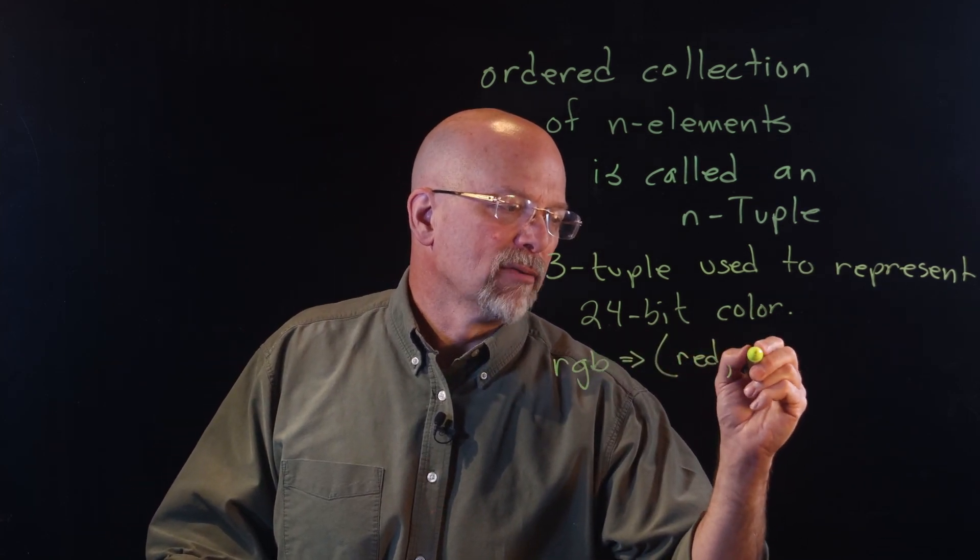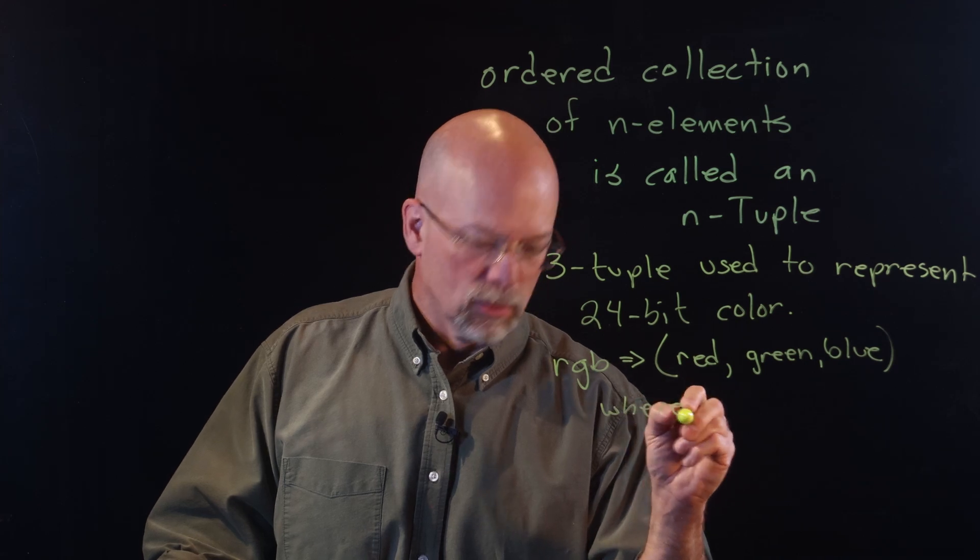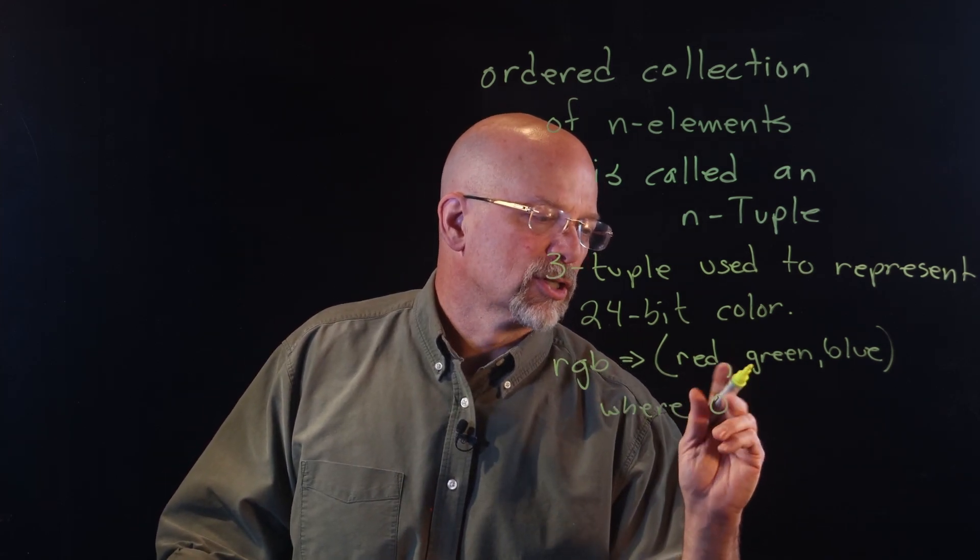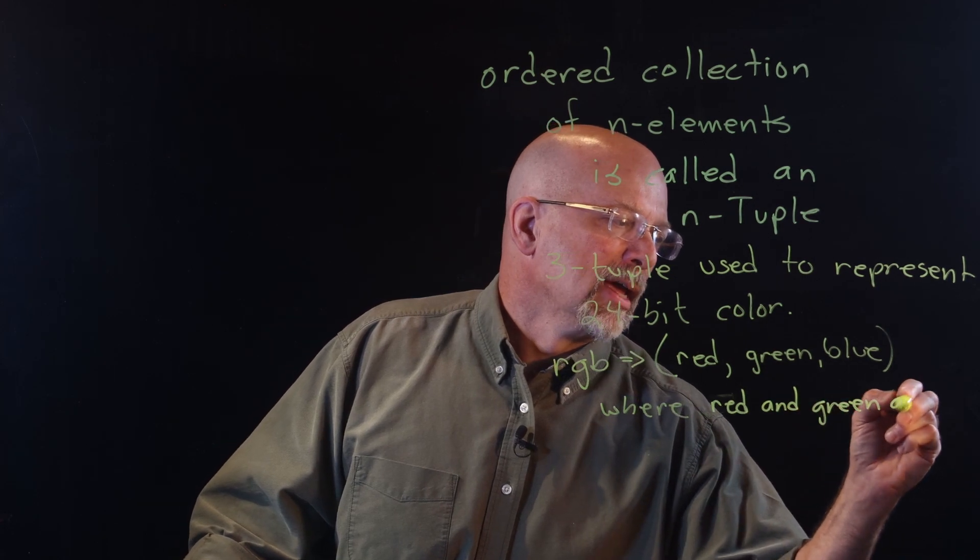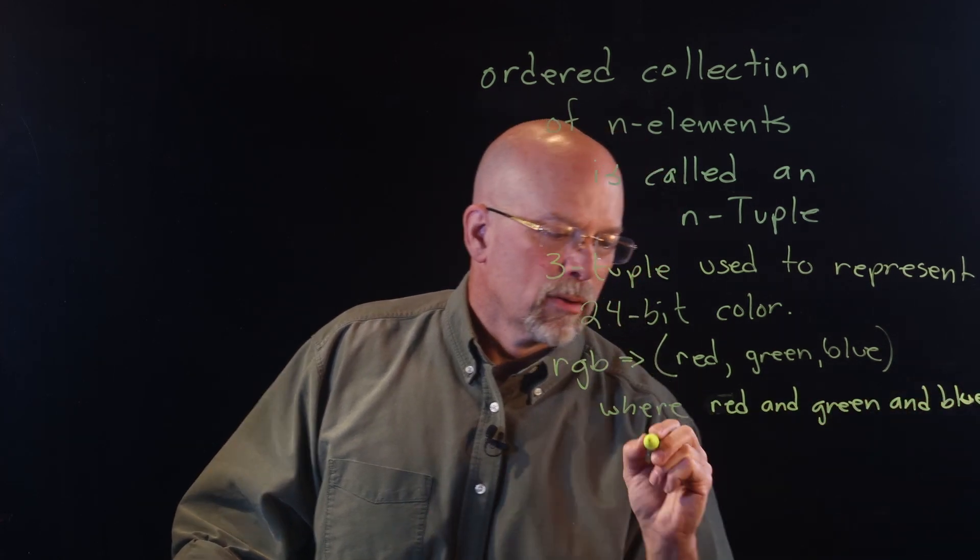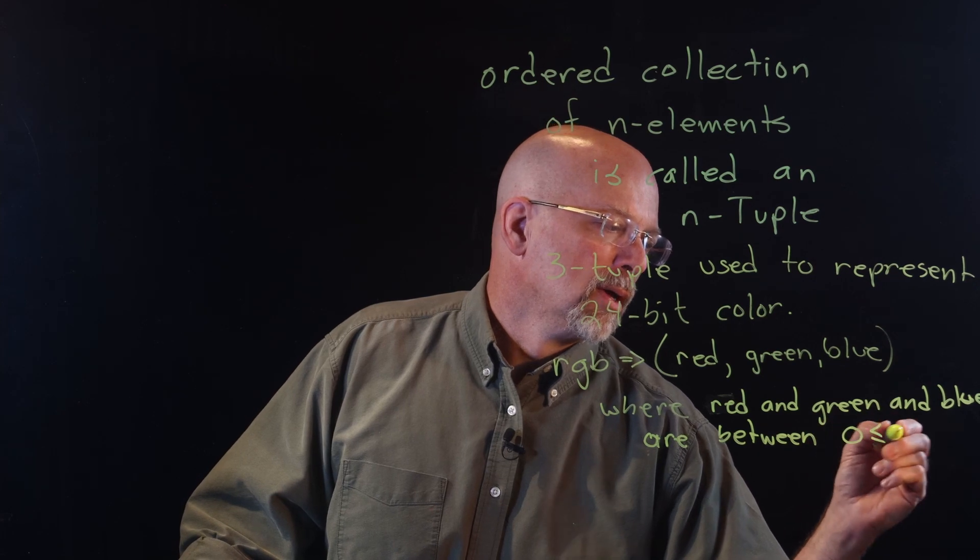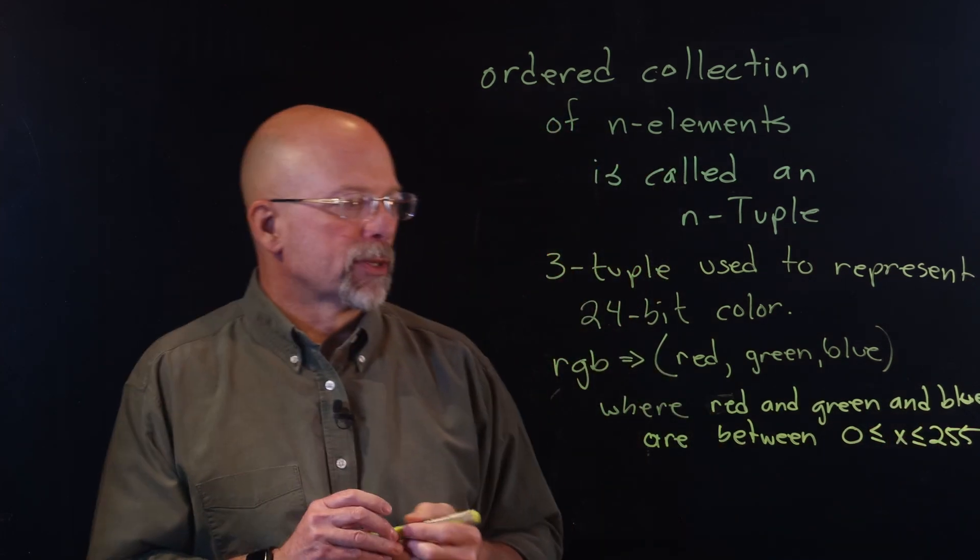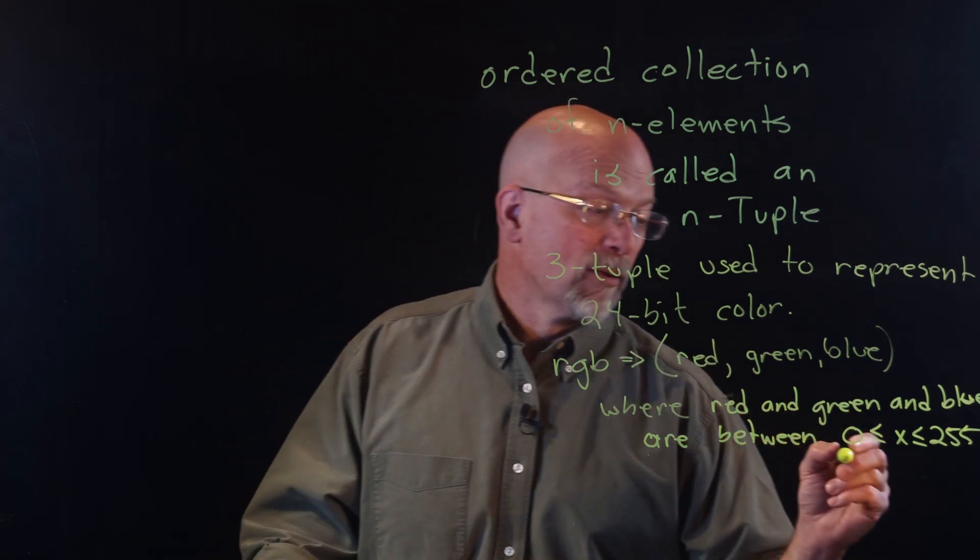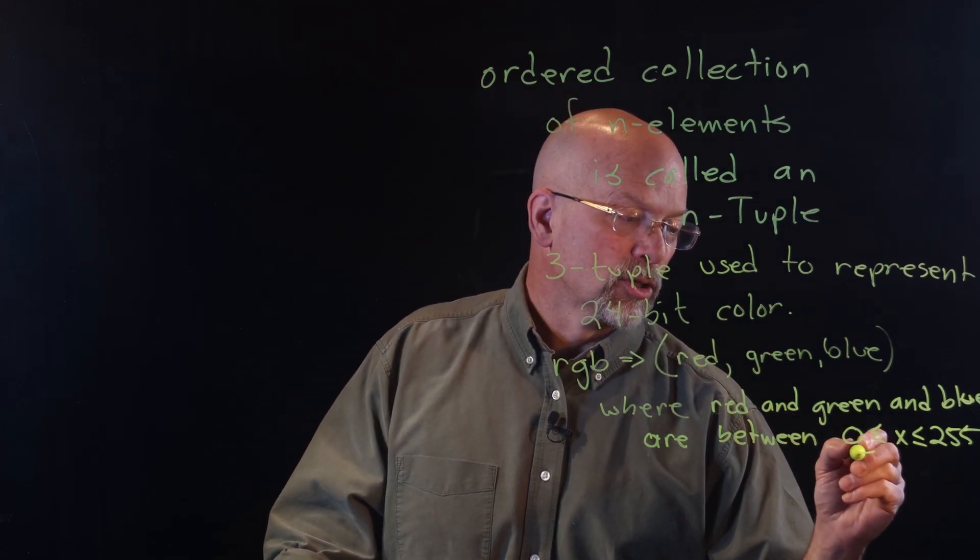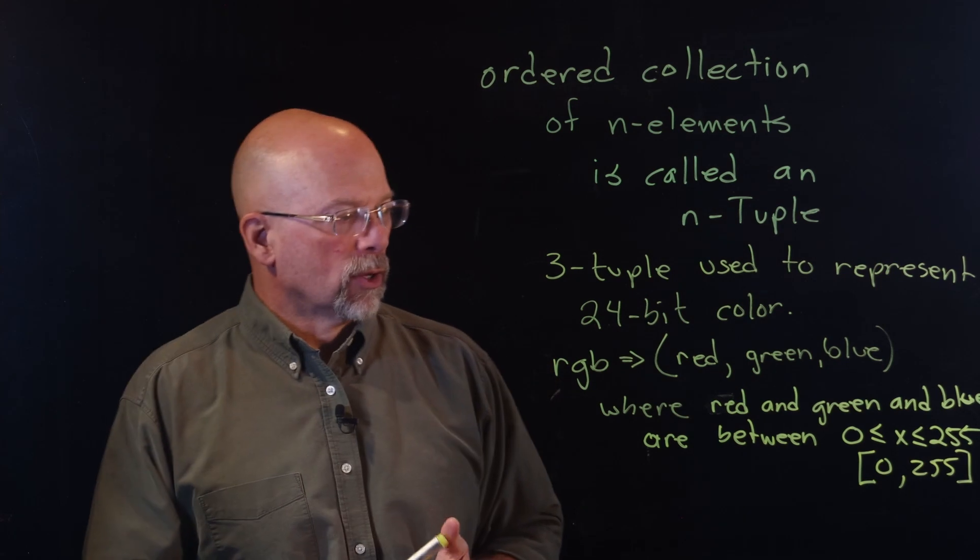And each one of these values is going to be from 0, where red and green and blue are between inclusive 0 and 255. So our values of red, green, and blue all lie in that range. They can be 0 up to 255. Another way of representing this, saying greater than or equal to is just simply put a square bracket, [0, 255], a square closing bracket.